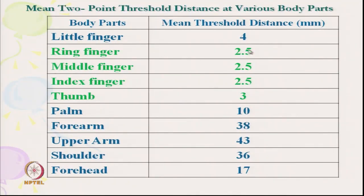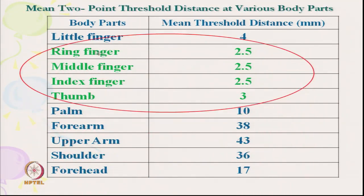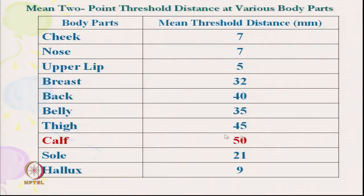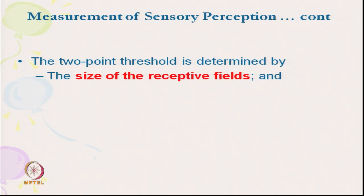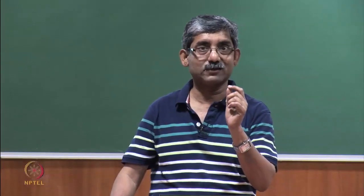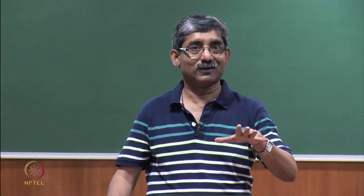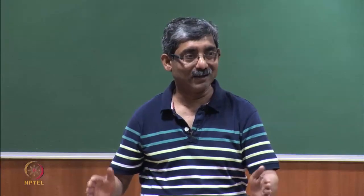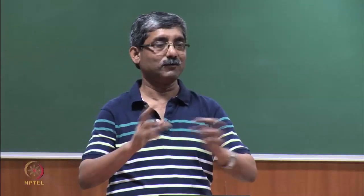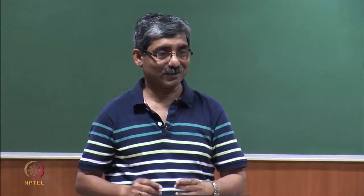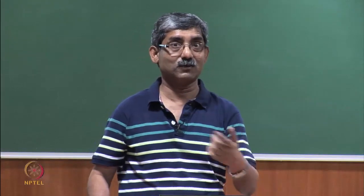If you see it in tabular form, the green color represents the finger zone, which is very low, and at the calf the sensitivity is very high. The two-point threshold is discriminated by the size of the receptive field. If the size of the receptive field is more, it will give a higher distance. And if the extent of overlap is more, it will not be able to give proper sensation and will not be able to discriminate.